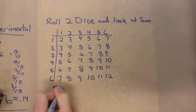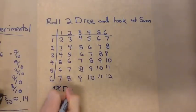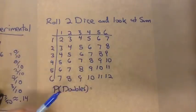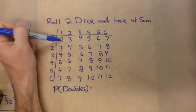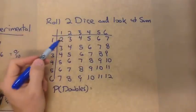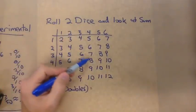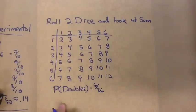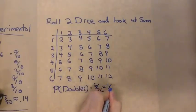Let's first look at the probability of getting doubles. I have to look at all the ways I could get a double: one plus one, two plus two, three plus three, and on down to six. There are actually six ways out of 36 possibilities that I could get doubles, which is one-sixth.